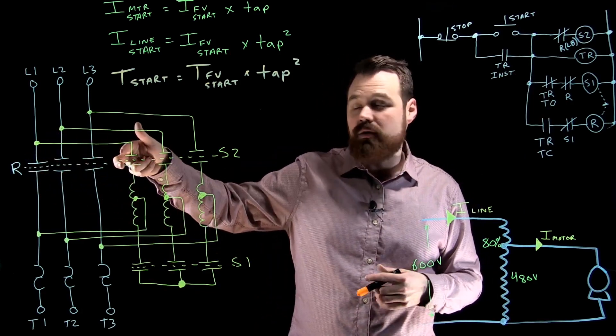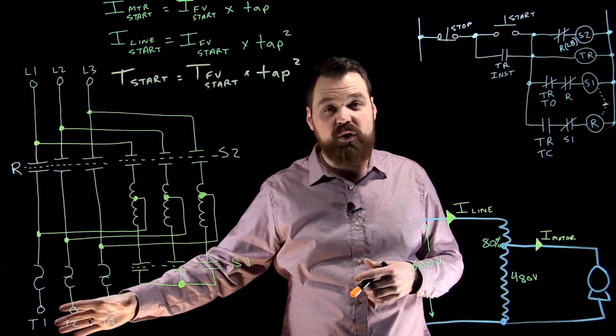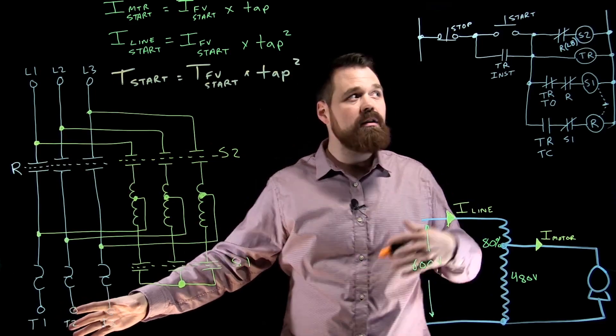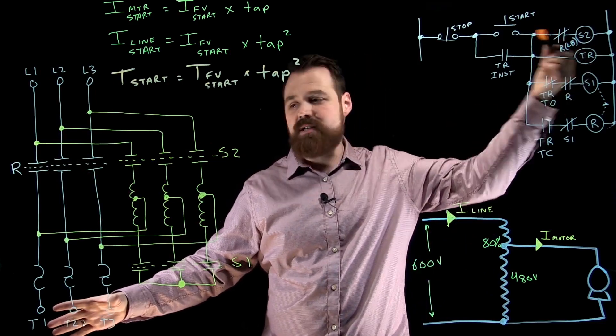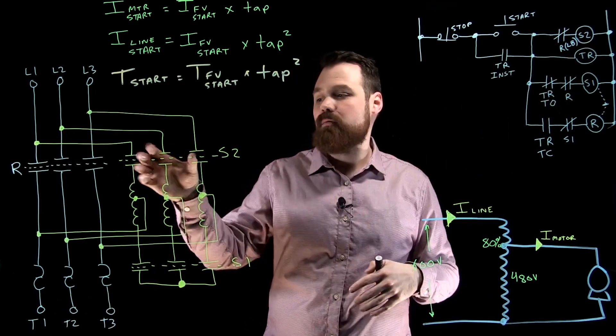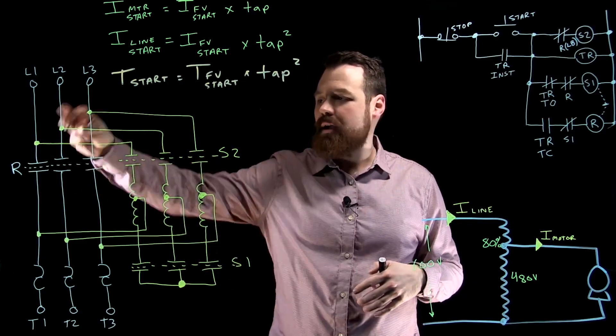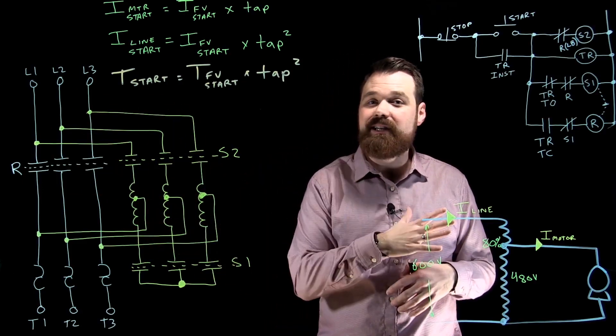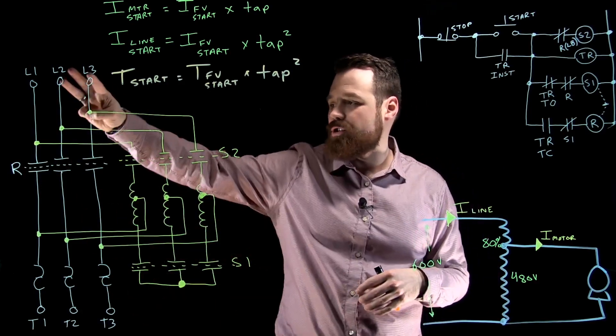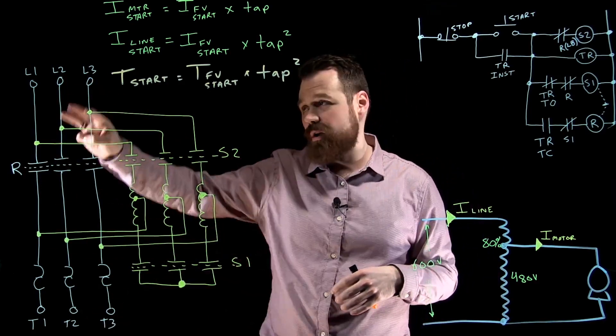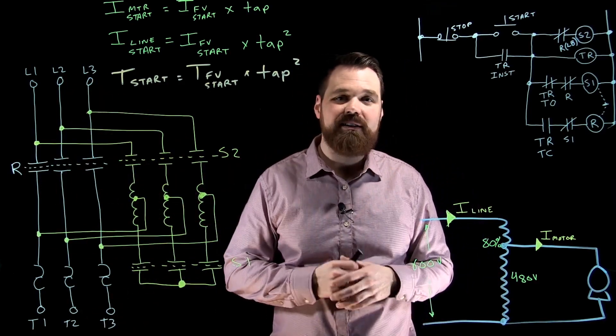We close our R contacts. Now we have full voltage, full current flowing to that motor. Then our R contacts open that late break, which will open S2. Now I no longer have a path through my autotransformer, it's completely removed from the circuit. We're just running at full voltage, full current through my run contacts.